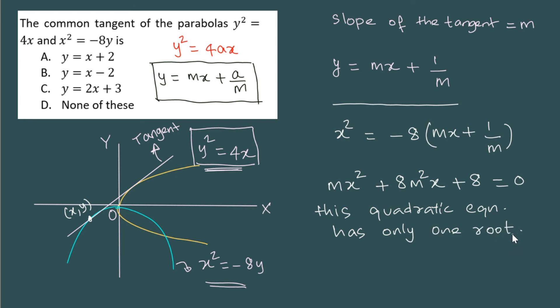Now, if you recall the properties of quadratic equations, the discriminant b square minus 4ac for a quadratic equation ax square plus bx plus c equal to 0 must be 0. So if I take b, b is 8m square. So that's 64 m to the power 4 minus 4ac. So 4 into m into 8. This must be 0.